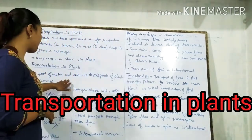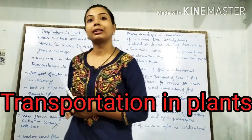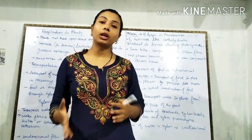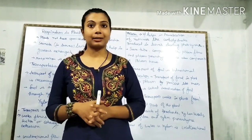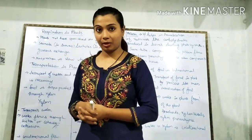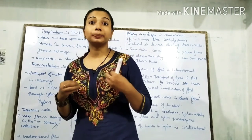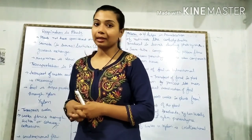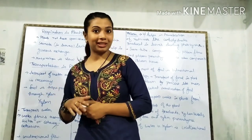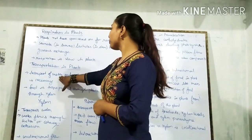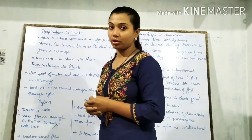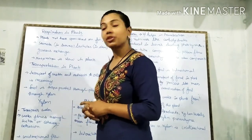The next topic is transport in plants — water and nutrients, that is food and carbohydrates, which plants produce in photosynthesis, and water transportation from roots to leaves. These two things are necessary for transportation. The transport of water and nutrients to all parts of plants is necessary.